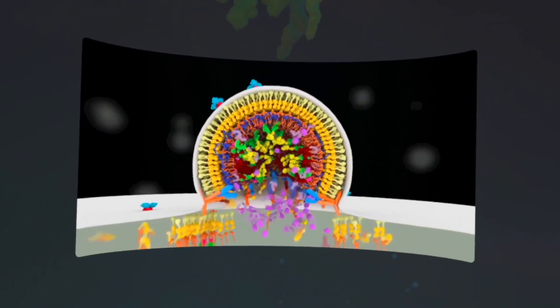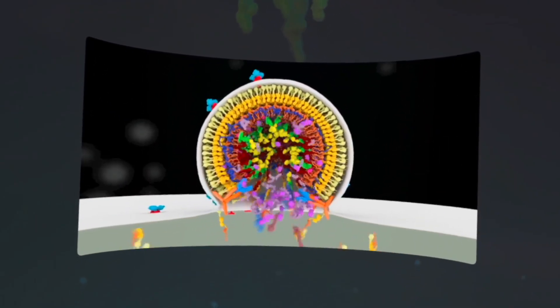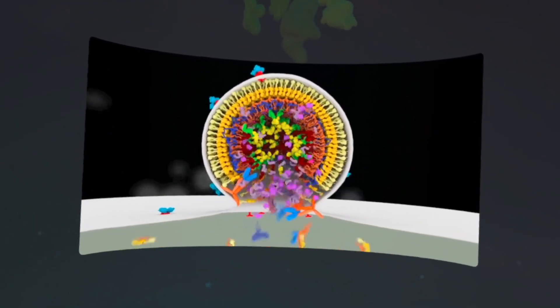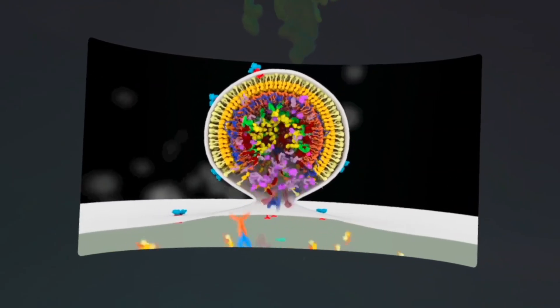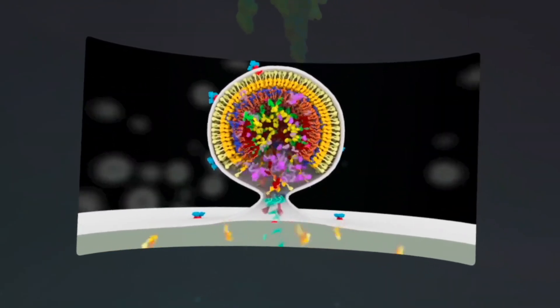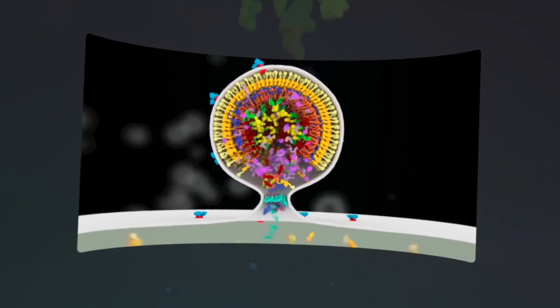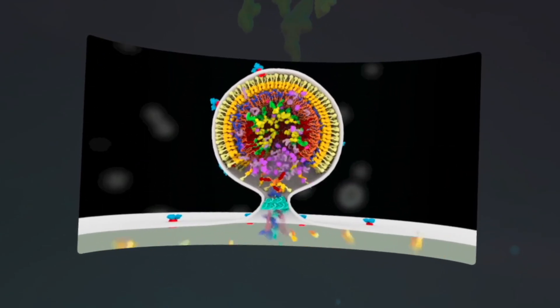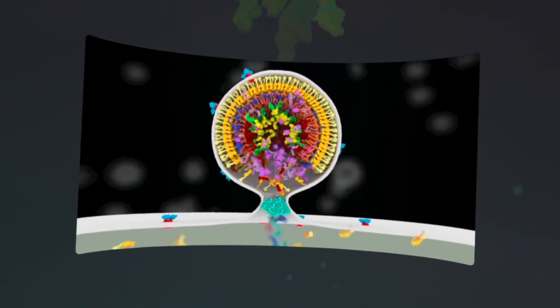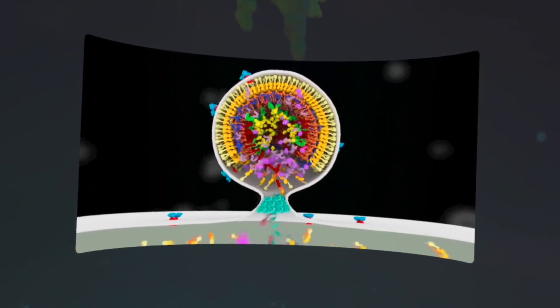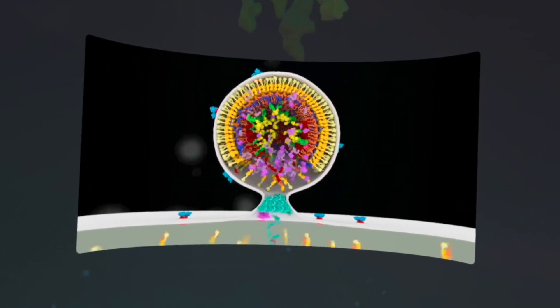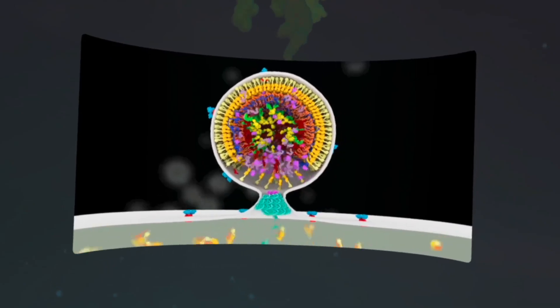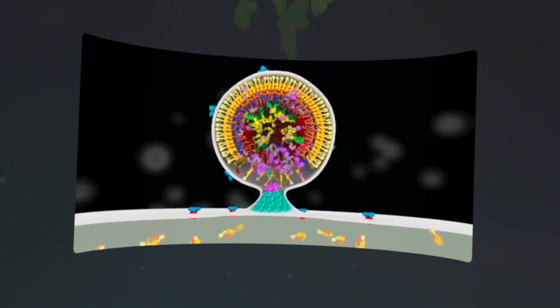As the viral bud grows, numerous other proteins are recruited. When the viral bud is formed, proteins appear that, by constricting the cellular membrane at the neck of the bud, cause fission of the membrane and release of the bud itself.